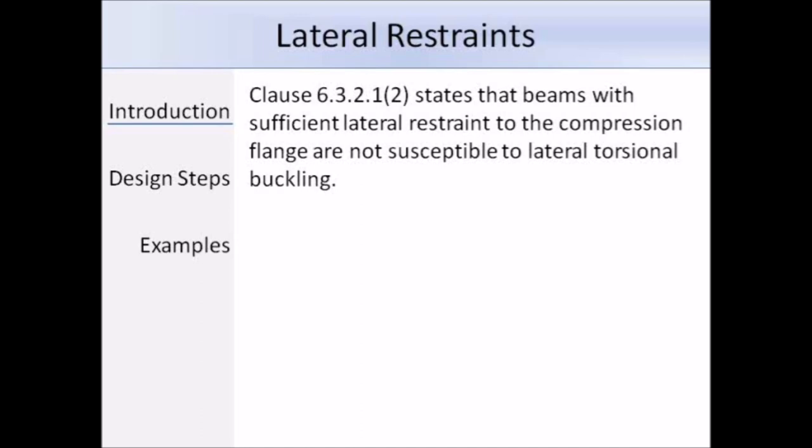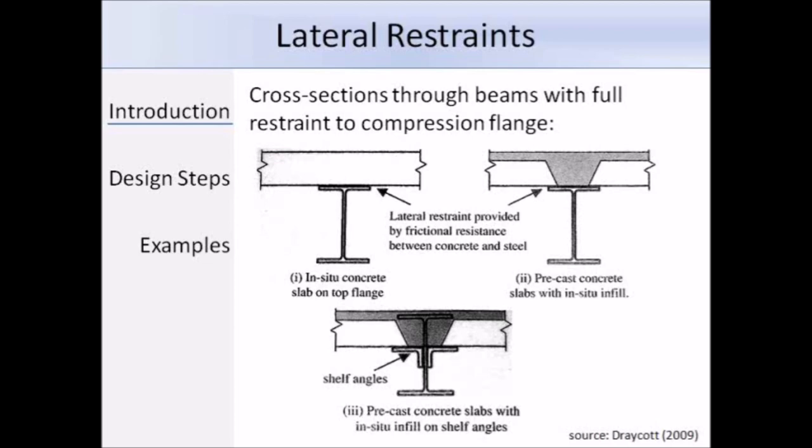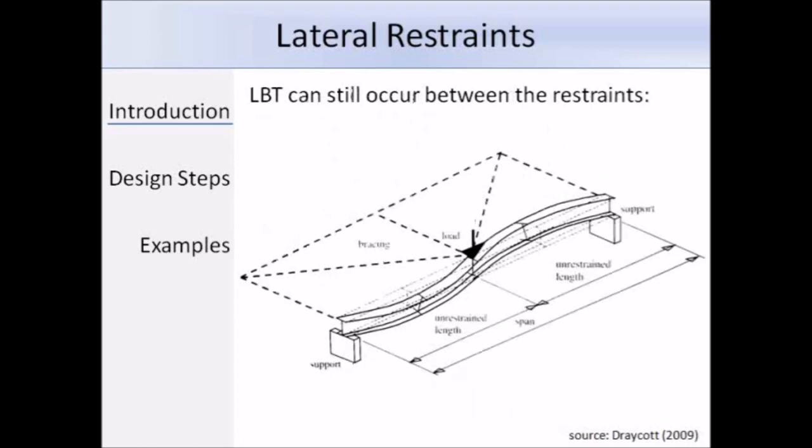This slide shows some examples of fully restrained compression flanges. The first diagram is of an in-situ slab on top of a beam. The second diagram is of a precast concrete slab with in-situ infill. It's shown in the diagram that the frictional resistance between the concrete and the steel provides the lateral restraint. The third diagram shows precast concrete slabs and in-situ infill on the shelf angles. It's important to note that even with the presence of lateral restraints, LTB can still occur between the points of restraint as illustrated in this diagram. It is therefore important that LTB checks are carried out in all unrestrained segments between points of lateral restraint.